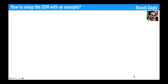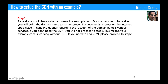Now let's talk about how to set up CDN with an example. We will take the example of Cloudflare and see some demonstrations. It's a three-step process. Step one: typically you will have a domain name like example.com. For the website to be active, you point the domain name to the nameservers. A nameserver is a server on the internet specialized in handling queries regarding the location of the domain name's various services. If you don't need CDN, you will not proceed to step two.